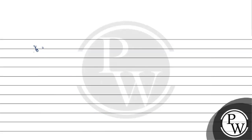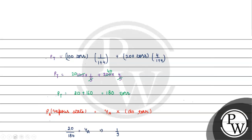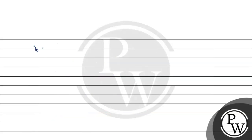Similarly, the mole fraction of B in the vapor state = PB / P_total = 160/180 = 8/9.